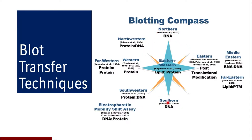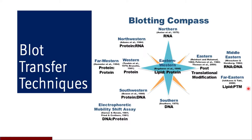It started with southern blotting, which is employed for detection of DNA. Later on, when it came to RNA, it was labeled as northern blotting, and when we could identify a particular protein it was named western blotting technique. Now there is a large variety of blotting techniques available: eastern blotting is employed for understanding post-translational modifications; middle eastern is for RNA and DNA interactions; far eastern is for lipid and post-translational modifications.